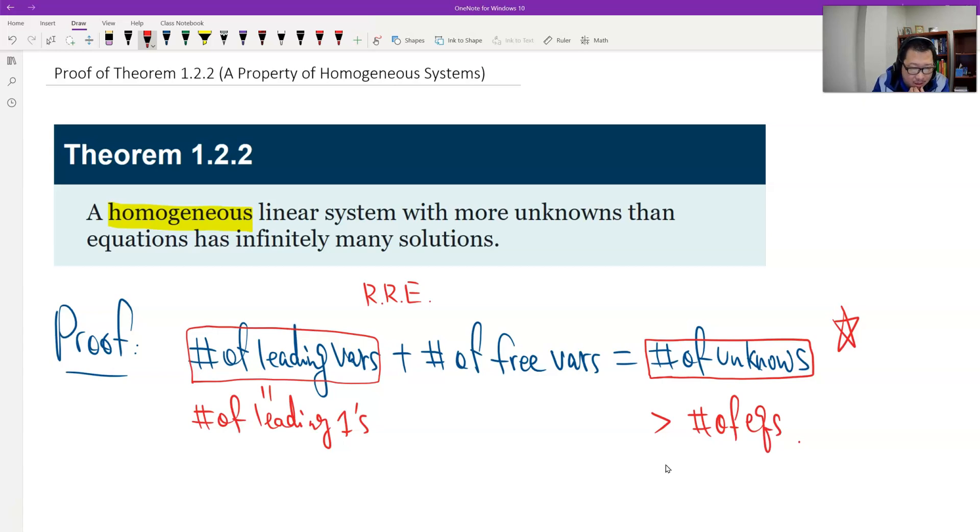And then, how many leading ones do we have? Each leading one is from each equation. So therefore, the number of leading ones should be no more than the number of equations. There should be no more than, which means less than or equal to the number of equations.